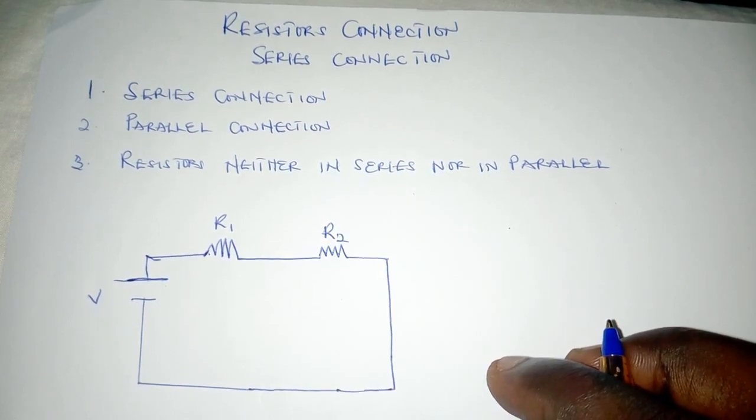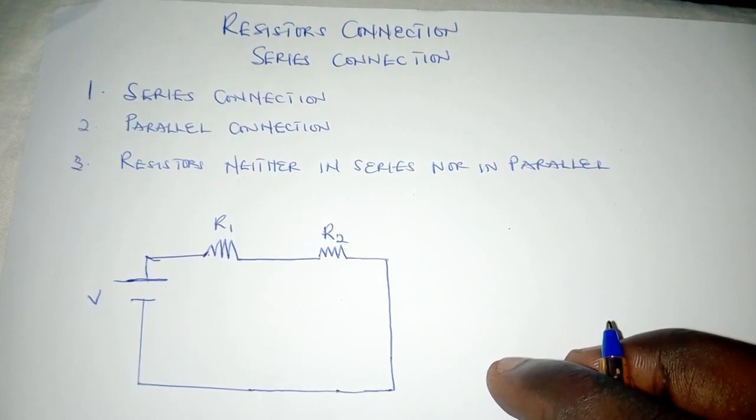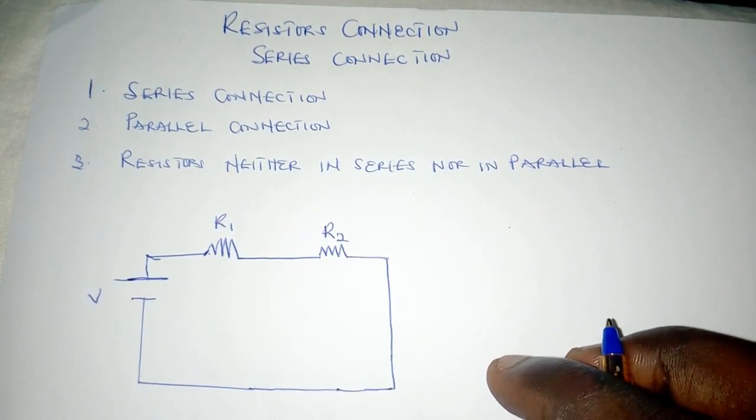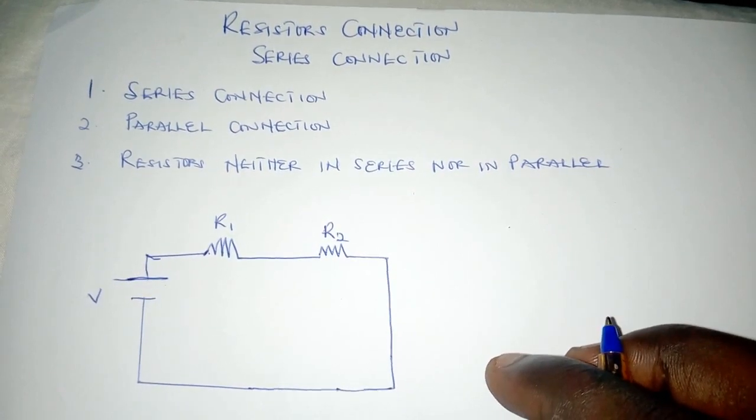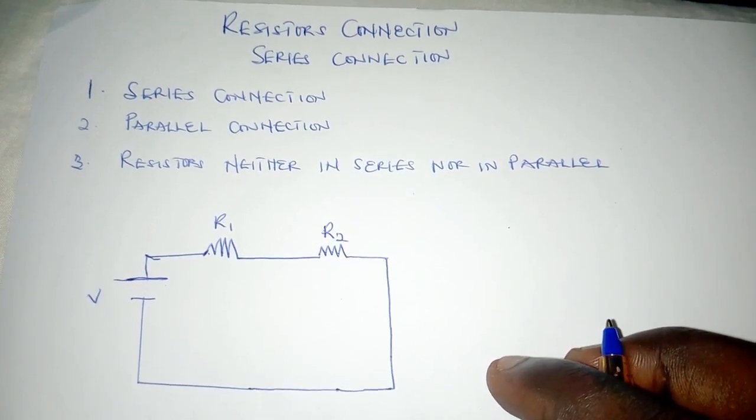And that we know it to be the voltage or potential difference across a conducting material is directly proportional to the current flowing through that material.